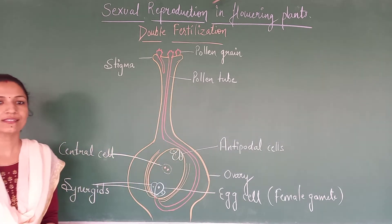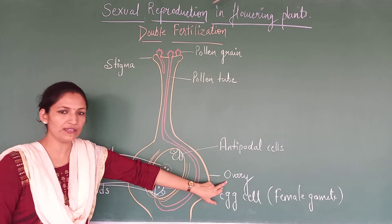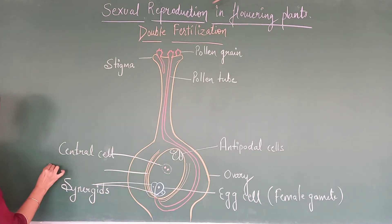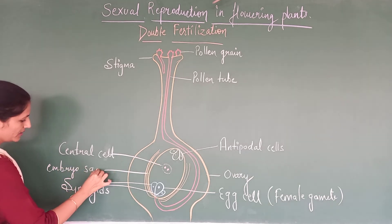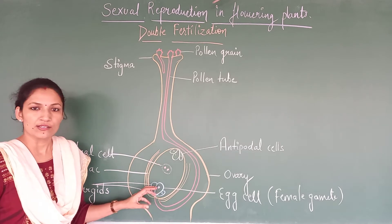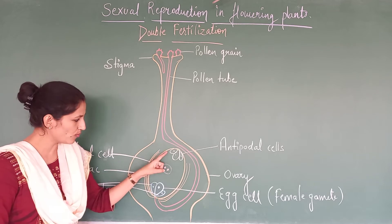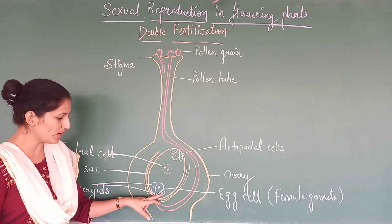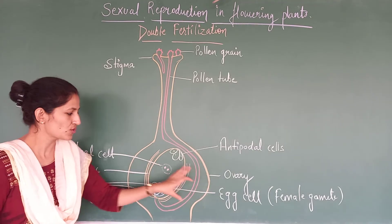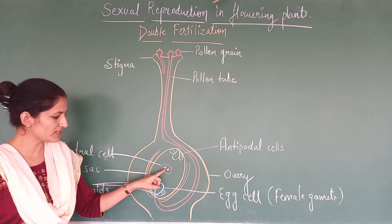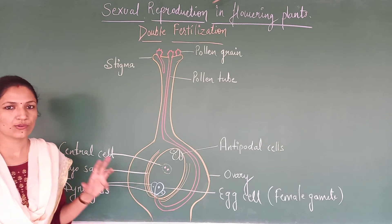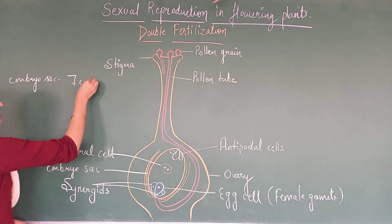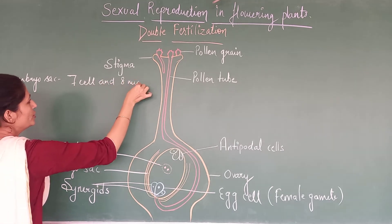Now we will see — in this pistil, this swollen part is the ovary. This is the embryo sac, which is going to contain different cells. This embryo sac contains 7 cells: 3 antipodal cells, 1 central cell, and 3 cells toward the ovary side. Out of those 3, 2 are synergids and 1 is the egg cell. So total 7 cells, and you can see 8 nuclei — 3 antipodal nuclei, 2 synergid nuclei, 1 egg nucleus, and 2 polar nuclei in the central cell — giving us a total of 8.